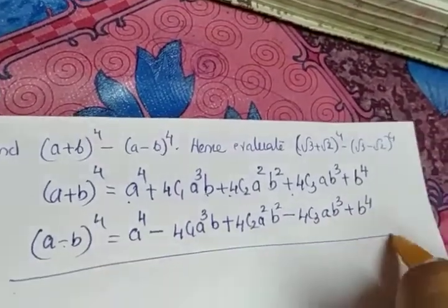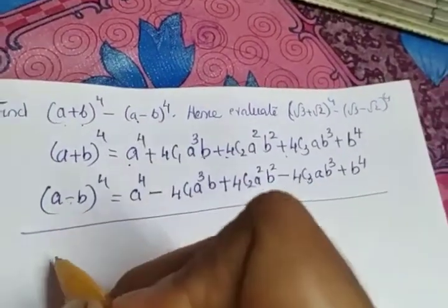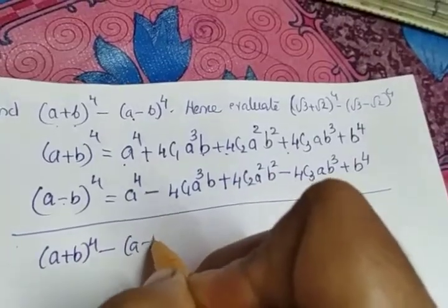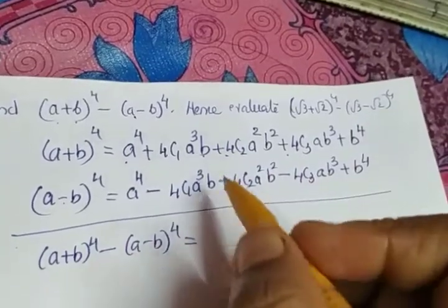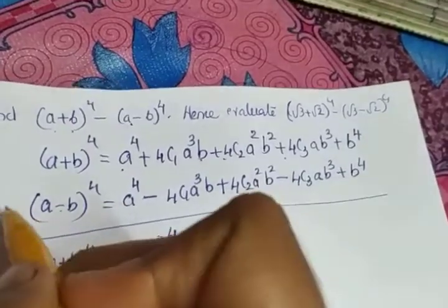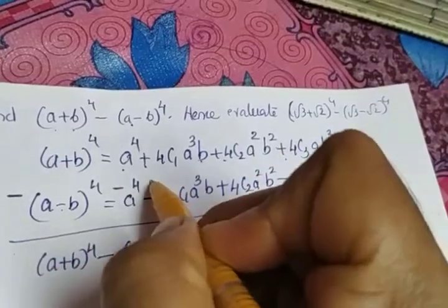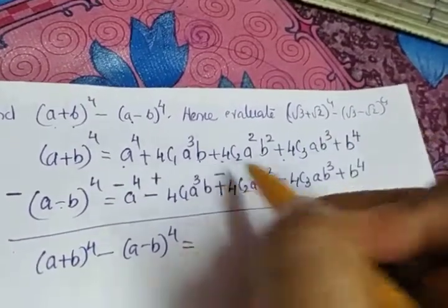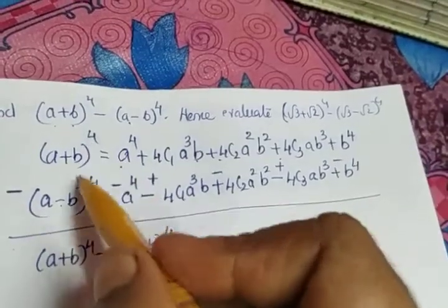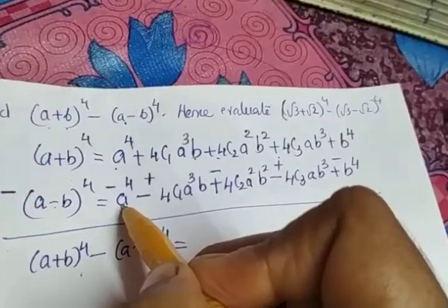We need (a + b)⁴ minus (a - b)⁴. Instead of subtracting, we change the sign of the second equation and add. So the signs of the second expansion flip: the first term becomes negative, the second negative becomes positive, the third becomes negative, and so on. The a⁴ and minus a⁴ terms get cancelled.